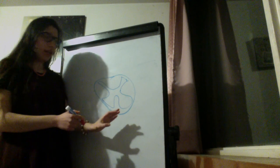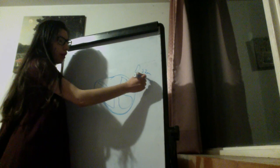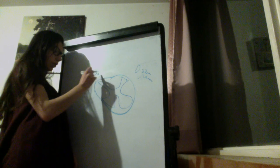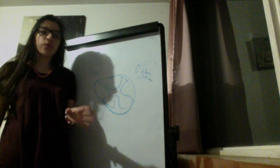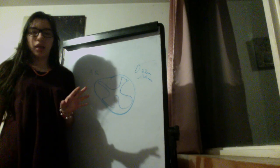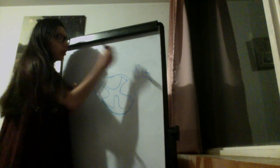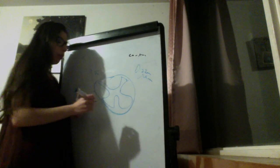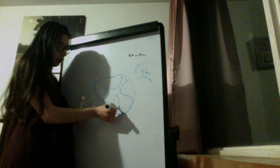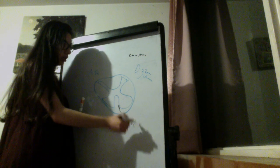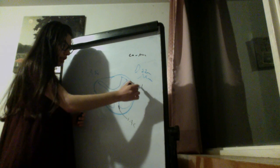We have ascending and descending tracts. The descending tracts include mostly the motor pathway, and ascending tracts include the sensory and some proprioception. First, let's see the corticospinal tract. Remember that we have anterior and lateral corticospinal tract. The anterior corticospinal tract will be here, and the lateral corticospinal tract would be here.